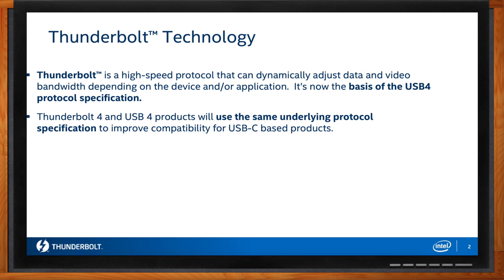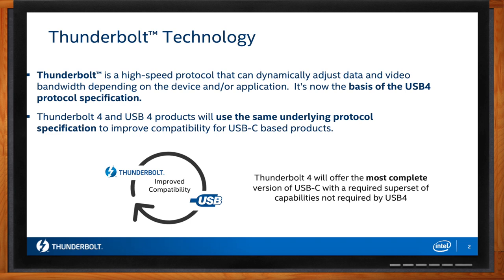Thunderbolt was developed to create new user experiences by simultaneously supporting the fastest data and the most video bandwidth available on a single cable while also supplying power. You can think of it as a virtual wire or tunnel for PCIe and DisplayPort. It's a single port with two bi-directional channels. A Thunderbolt link can be a single lane or two lanes aggregated, and each link can tunnel PCIe data or DisplayPort. In Thunderbolt 4, we can also tunnel USB protocols. Thunderbolt uses the USB-C connector, creating a single compact port that does it all.